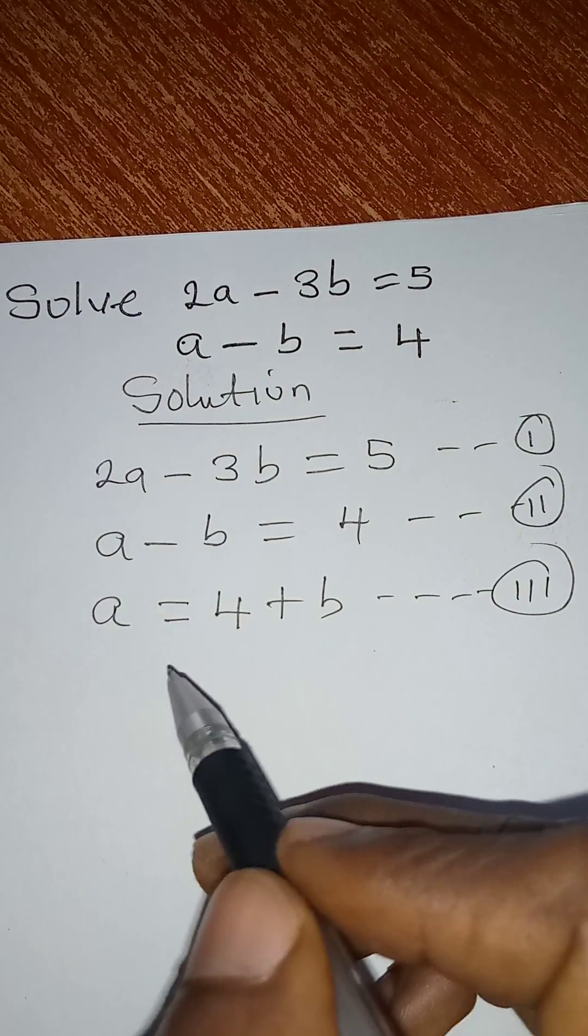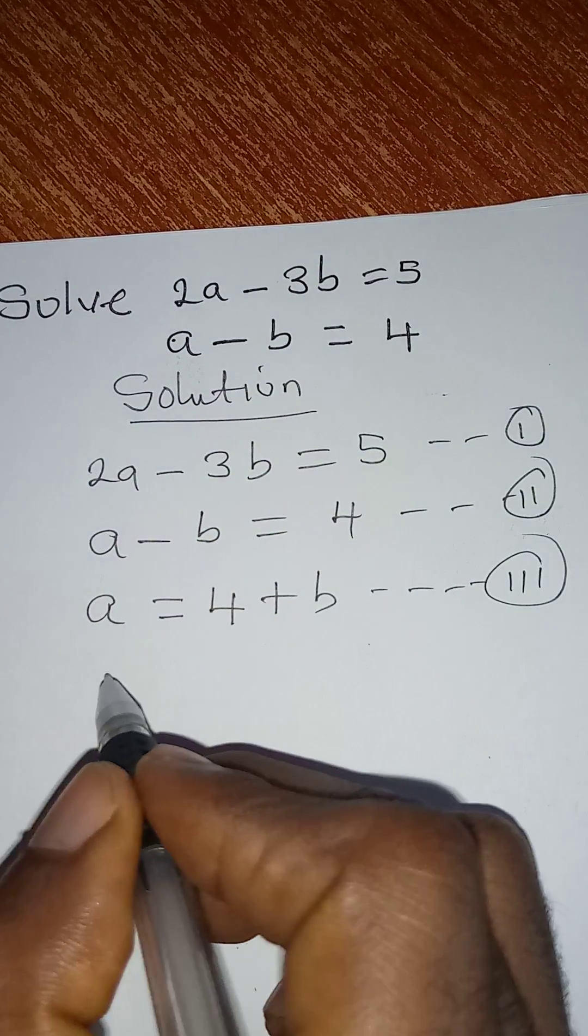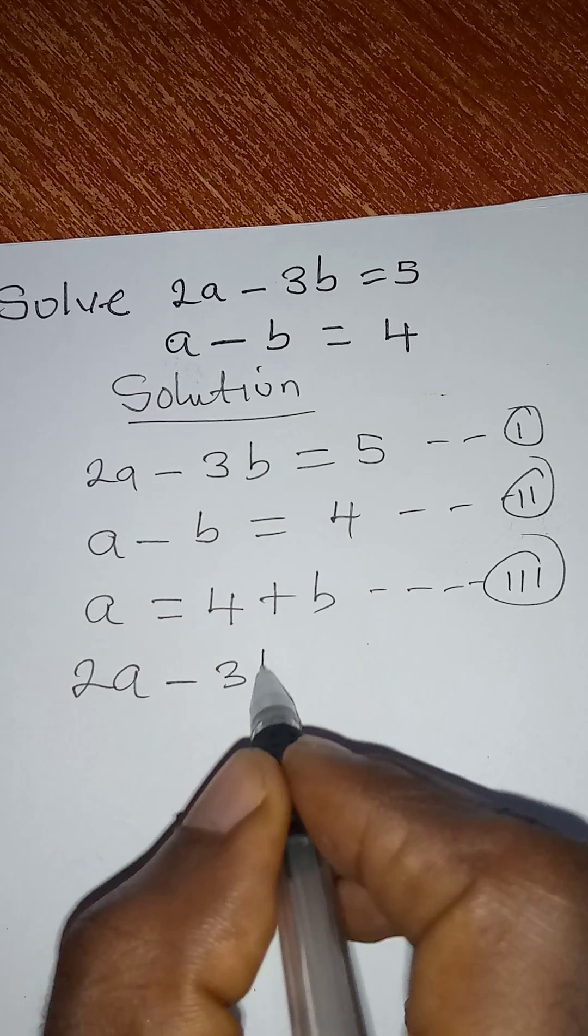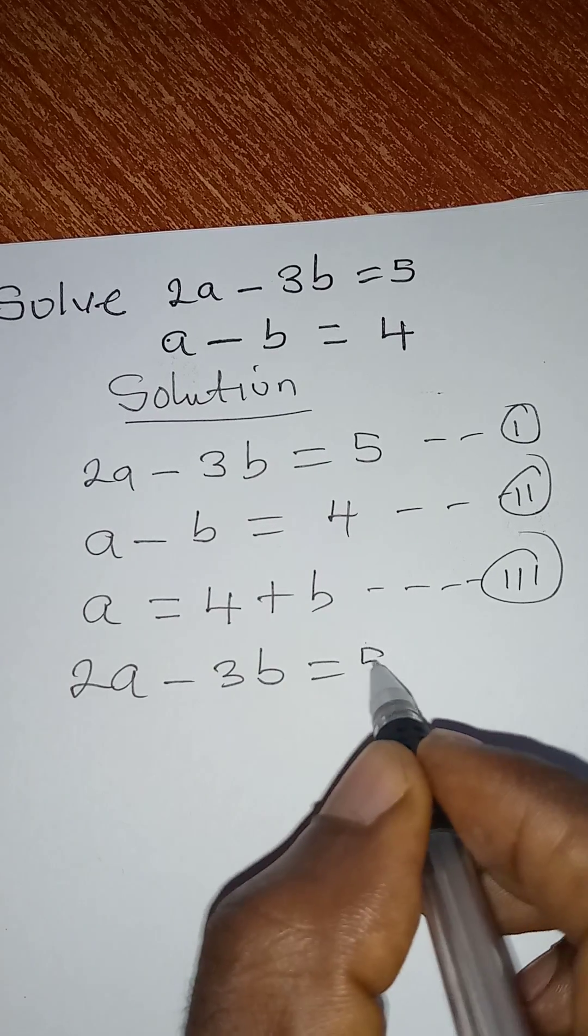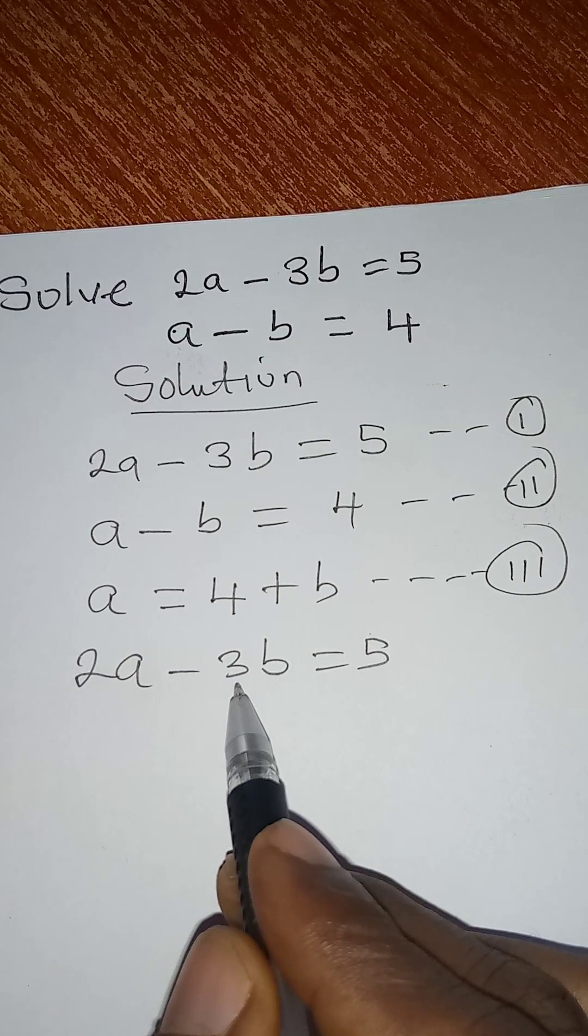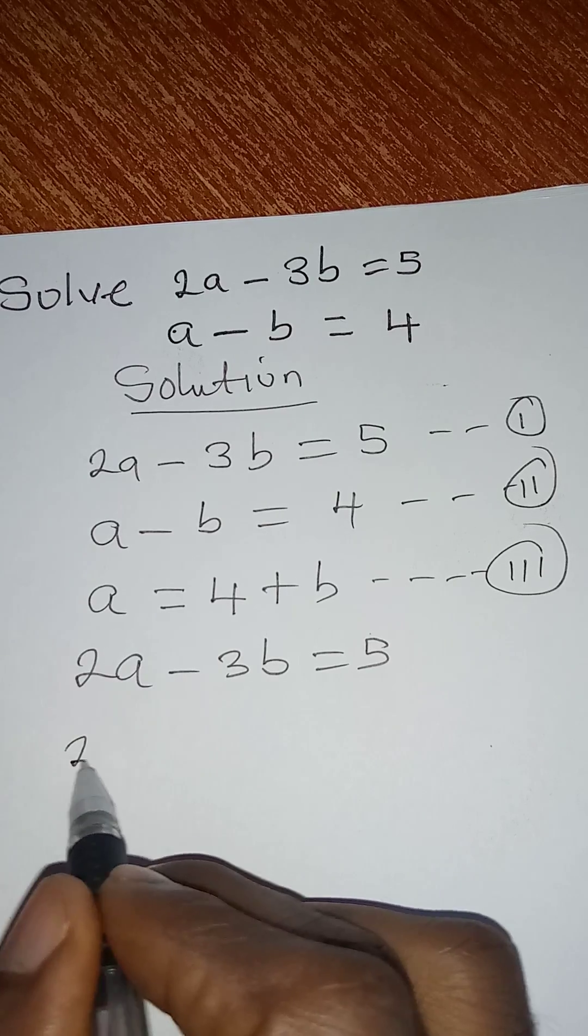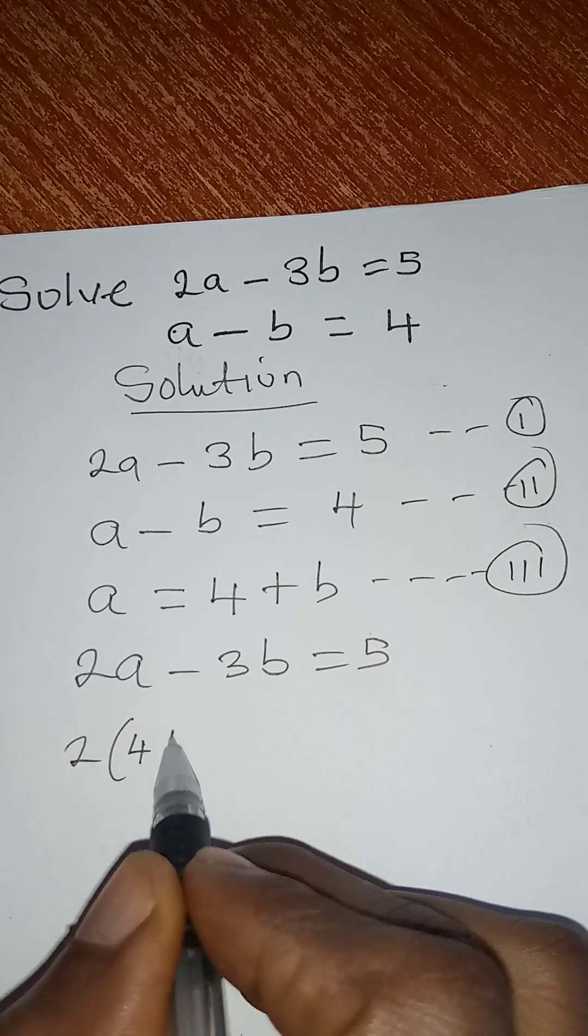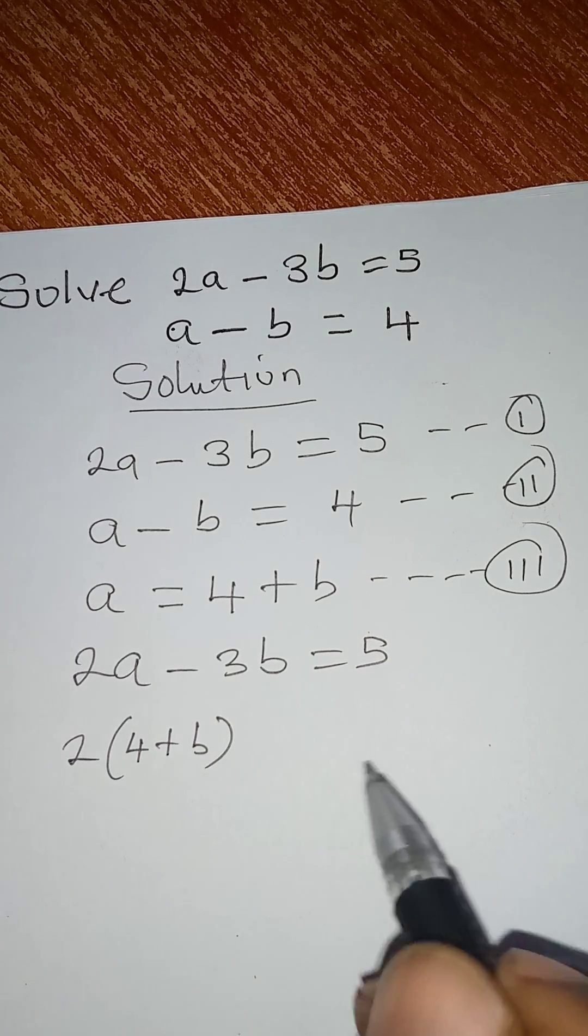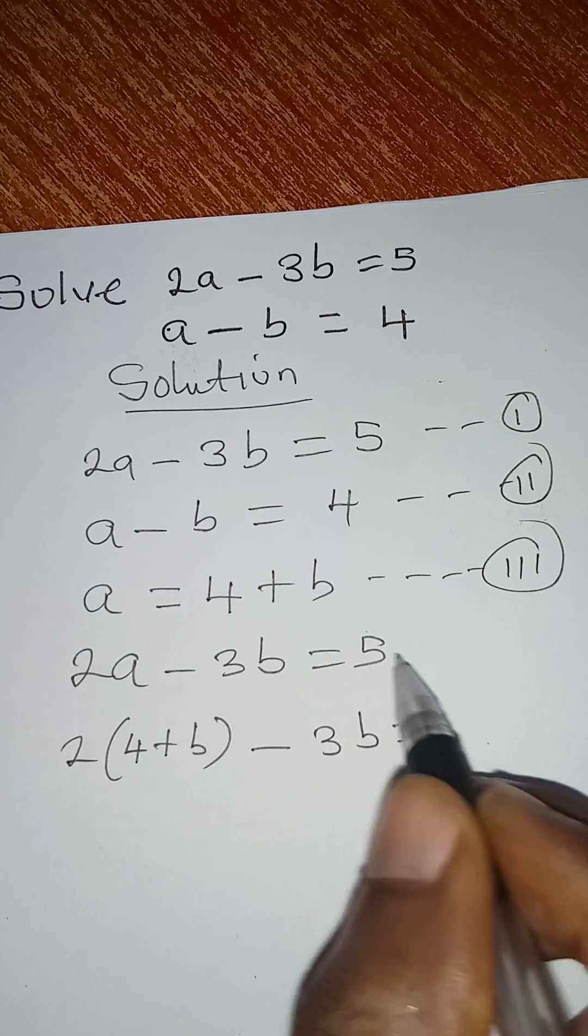Now put this value of a into equation 1. Let me write equation 1 again. I have 2a minus 3b equal to 5. But now we have a to be equal to 4 plus b. So I'm going to have 2 into bracket 4 plus b. That means in place of a I'm writing 4 plus b then minus 3b equal to 5.